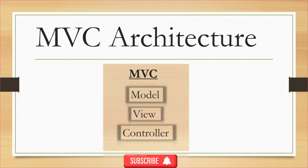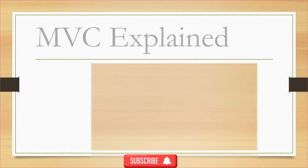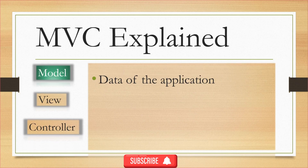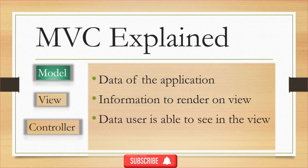In MVC, we have a clear separation of web application components based on their working. The first component is Model. Model is where the data of the application resides. It represents the information that will help the view to render the data — whatever data the user sees on the view resides in the model. For example, in a social media application, posts, comments, and messages are different models which contain data related to those components.